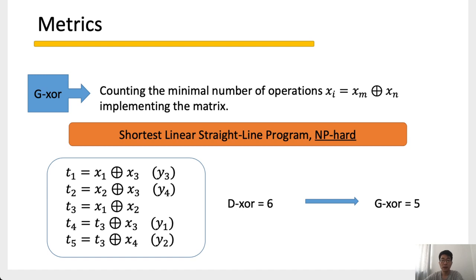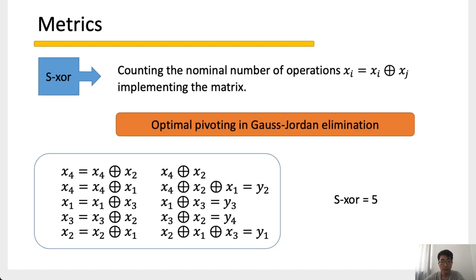The second XOR is what we call general XOR. It equals the minimum number of operations like Xi = Xm XOR Xn. However, it has been proven to be NP-hard to find the minimum general XOR, so it is hard to always find the optimum solution, especially for large matrices. For the 4×4 matrix example, we can find an implementation using only 5 GXORs. Sequential XOR counts the minimum number of in-place operations like Xi = Xi XOR Xj, corresponding to the optimum pivoting in Gauss-Jordan elimination. This matrix can be implemented using 5 SXORs.